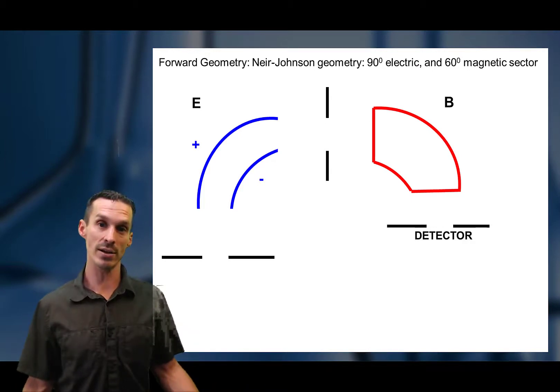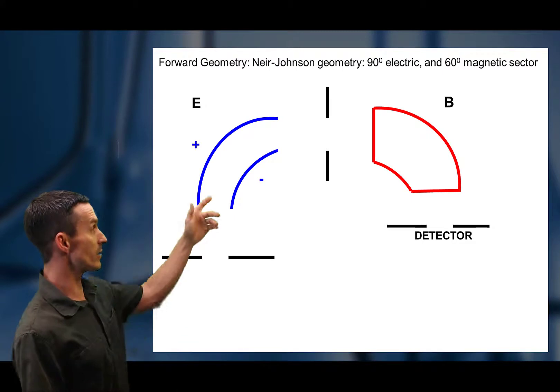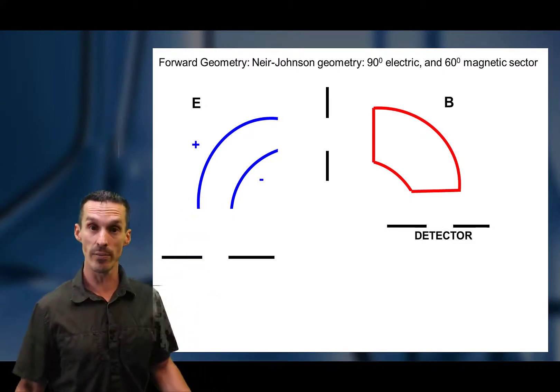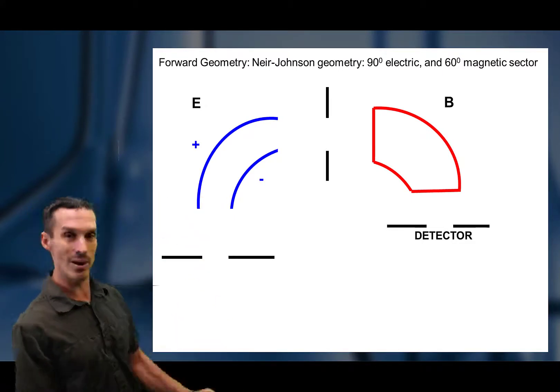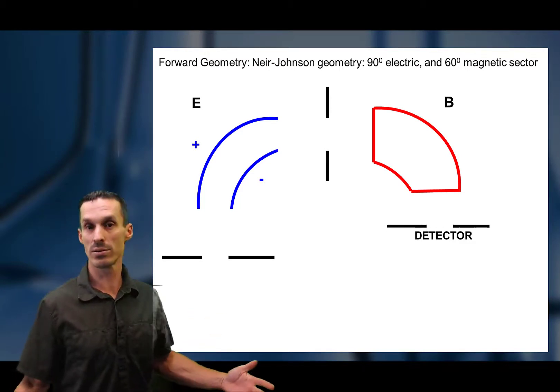You can combine an electrostatic sector, which separates on kinetic energy, and the magnetic sector, which separates on momentum. And if you do it just right, in just the right geometry, you can make the distribution kind of cancel itself out. So let's just take a look.